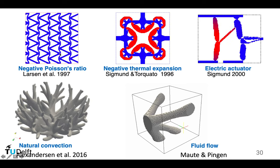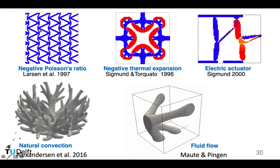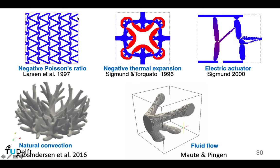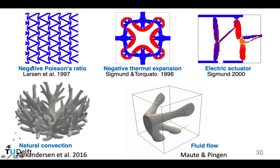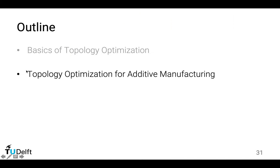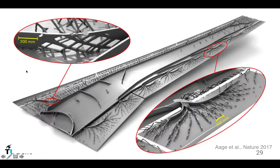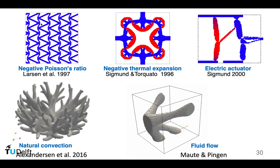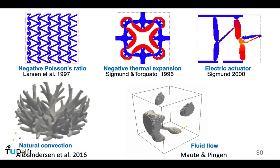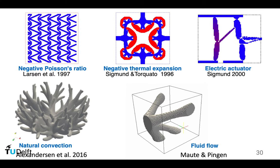By designing a microstructure or architectured geometry, if you consider this block as a material it has a negative Poisson's ratio. Looking at this animation, if we compress it in the x direction, the y direction is also compressed and shrinks.